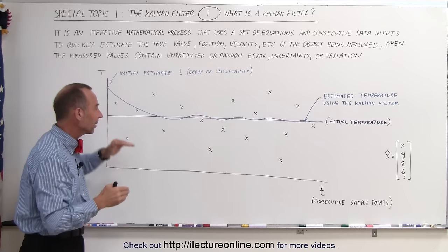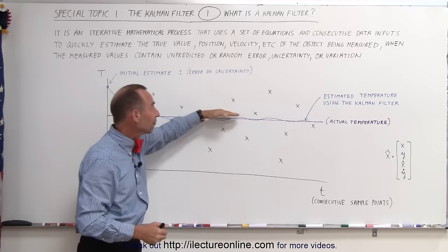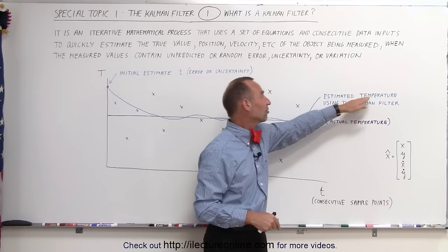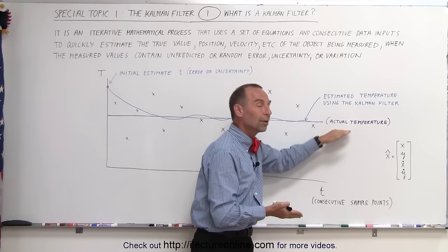the variations will become very, very small and the predicted value through the Kalman filter process will be very, very close to the actual temperature in this case, in this example. So the estimated temperature using the Kalman filter will zero in and come very, very close to the actual temperature very quickly.